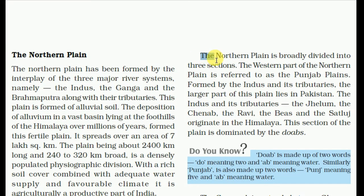The northern plain is broadly divided into three sections. The western part of the northern plain is referred to as the Punjab Plains, formed by the Indus and its tributaries. The larger part of this plain lies in Pakistan. The Indus and its tributaries — the Jhelum, Chenab, Ravi, Beas, and Satluj — originate in the Himalaya. This section of the plain is dominated by the Doabs.